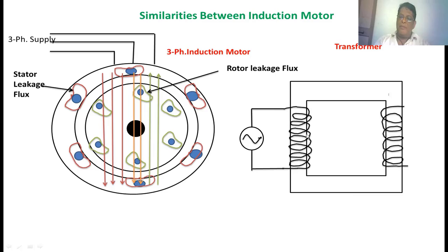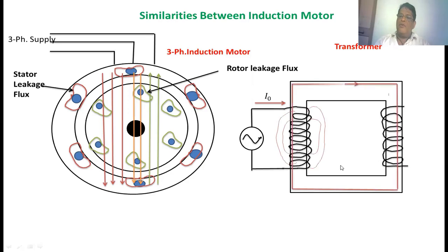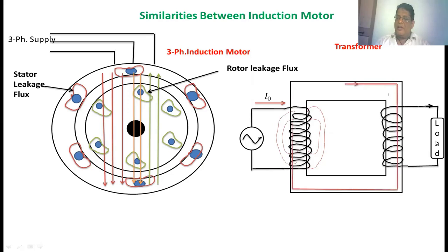Whenever we apply voltage to the primary winding, the transformer takes a no-load current I0. When this current passes through the primary winding, flux is created that links with both the primary and secondary windings, passing through the core. Some flux leaks and links with only the primary winding's own turns — this is the primary leakage flux. When a load is connected across the secondary winding, the secondary supplies current through the load, creating a flux from the secondary winding that is opposite to the main flux.